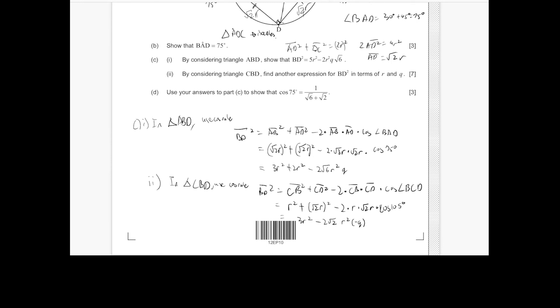Cosine 105 degrees, which we found in A to be minus Q. So this is 3R squared minus 2 root 2R squared and minus Q, which is 3R squared plus 2 root 2R squared Q. So this is the other relationship.